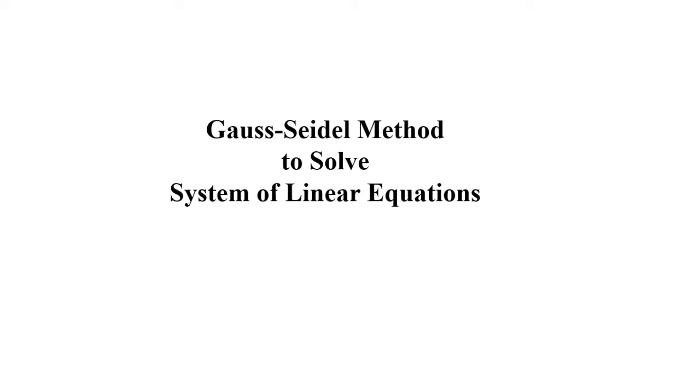Hello everyone. Today we will learn the Gauss-Seidel method to solve a system of linear equations. This is in continuation of our previous class where we derived finite difference method based equations to solve the temperature of any intermediate node T_ij. Once we have a set of such equations, we need to know some numerical techniques to solve them. Gauss-Seidel method is one of them. To have a better understanding, we will solve one example of steady state heat conduction in a two-dimensional plate. This problem comes under the category of elliptic equations, which we discussed in our previous class.